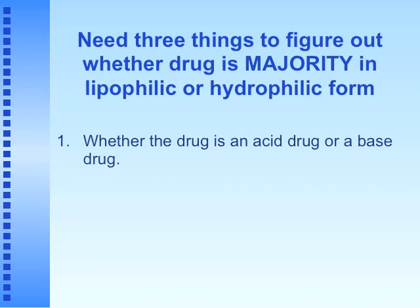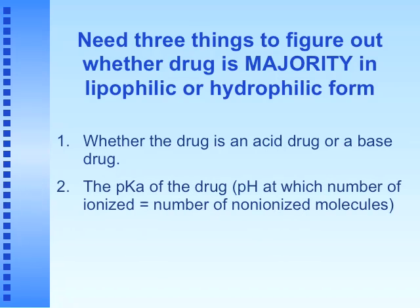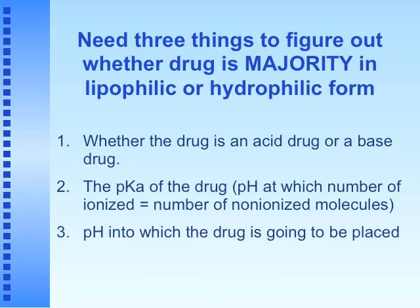We need three things to figure out whether the drug is predominantly in lipophilic or hydrophilic form: first, whether the drug is an acid drug or a base drug (at this stage we'll mostly tell you that); second, the pKa of the drug — defined as the pH at which the number of ionized molecules equals the number of non-ionized molecules; and third, the pH of the environment into which the drug will be placed, such as the stomach at about pH 2.2.